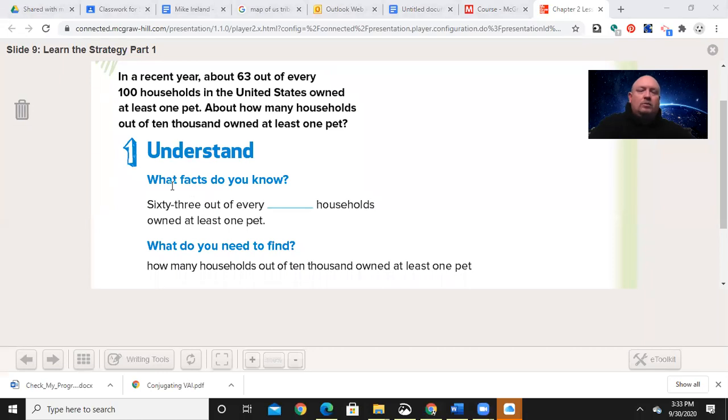About how many households out of 10,000 owned at least one pet. The first thing we need to do is understand: 63 out of every 100 owned at least one pet.